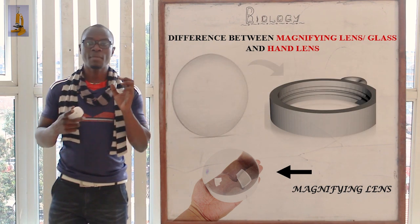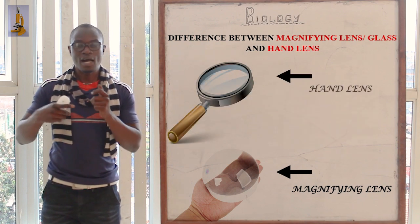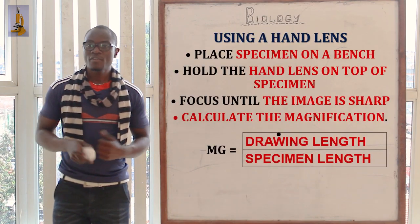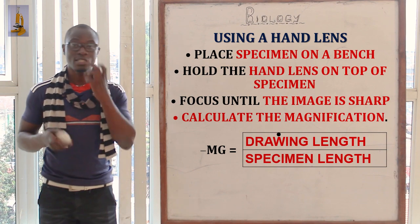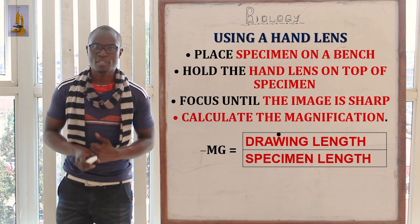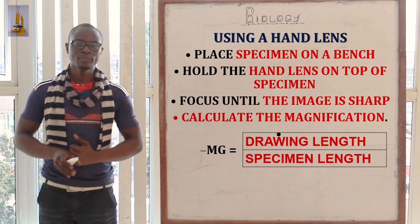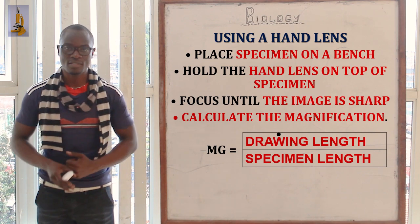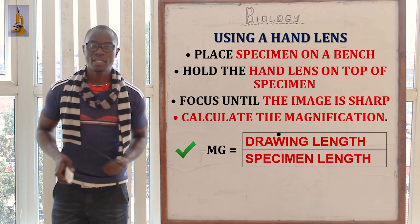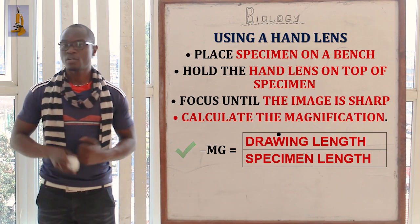If you take this magnifying lens or magnifying glass and place it in a frame containing a handle that you can hold, it now becomes a hand lens. To use a hand lens: first, place the specimen on a bench or table. Then hold the hand lens on top of the specimen. Next, focus until the image is in sharp focus and you can see clearly. Finally, calculate the magnification. The formula is: magnification equals drawing length over specimen length, or image size over actual size.